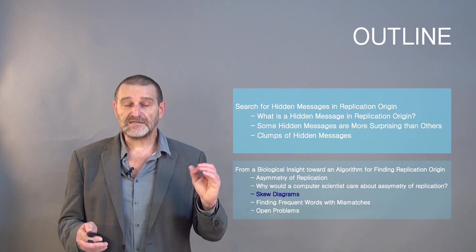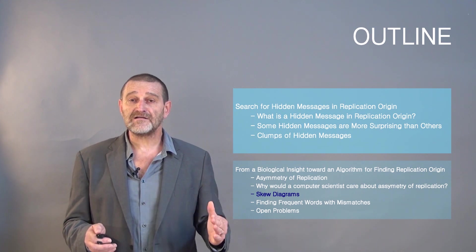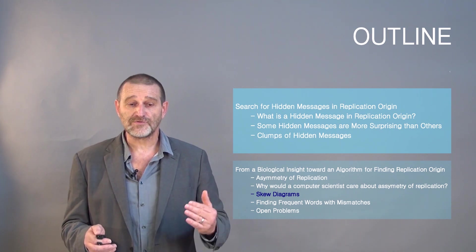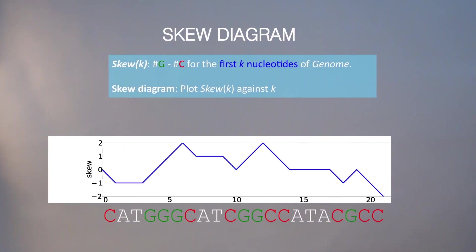Let's define a mathematical framework for how to deal with this. We define skew of k as simply the number of G minus number of C in the first k nucleotides of the genome. A skew diagram is simply a plot showing skew of k against k.